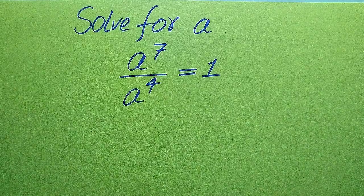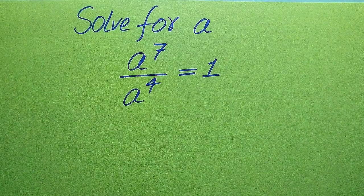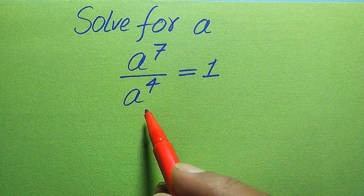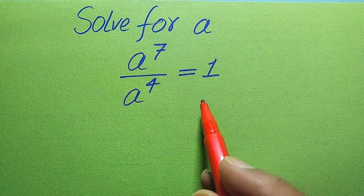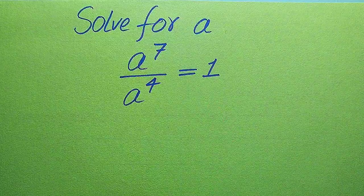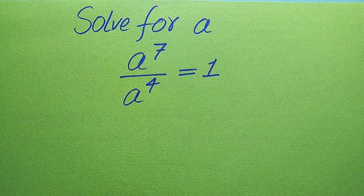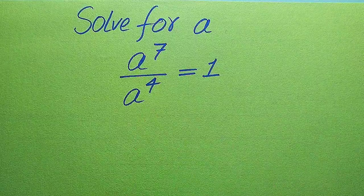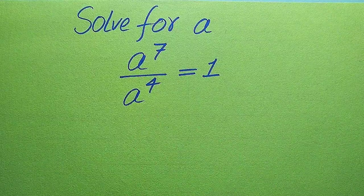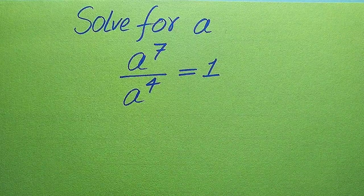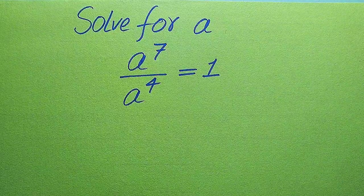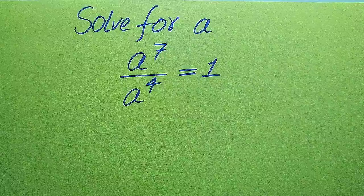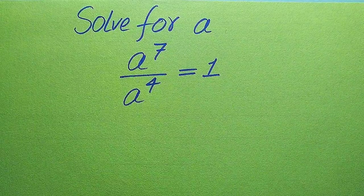Hello everyone. How to solve this problem: for the values of a, if we have a to the power of 7 divided by a to the power of 4 equals 1, and we solve this problem for all the values of a. Here we need to find all the roots of this equation. This is a seventh order equation, which means it has seven or fewer roots.